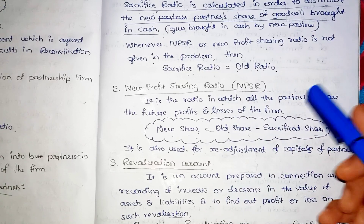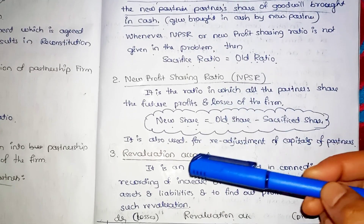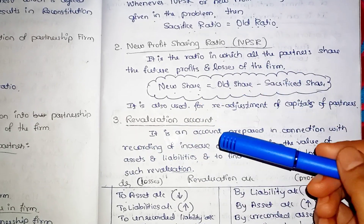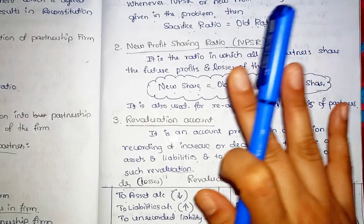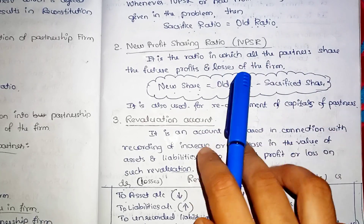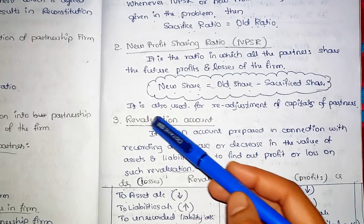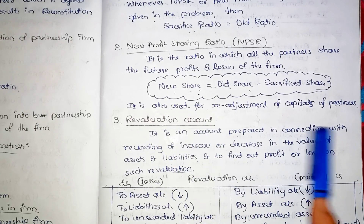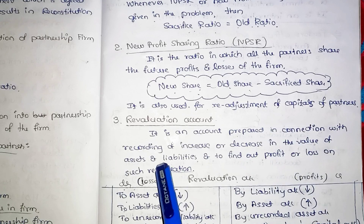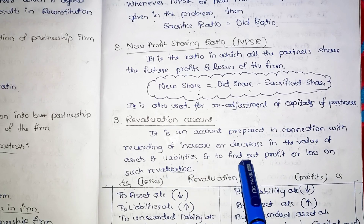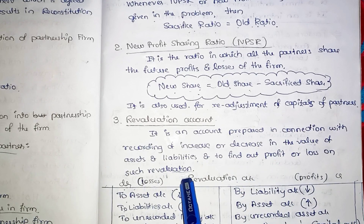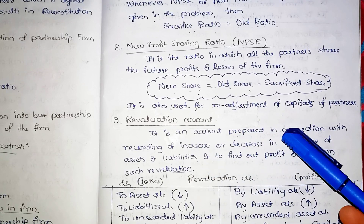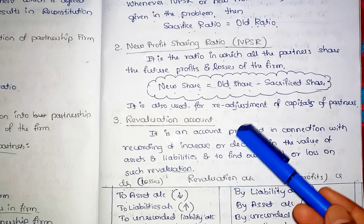This is the point in the model question paper. The next topic is the Re-adjustment or Revaluation Account. At the time of admission or retirement, asset and liability values are revalued. This is an account prepared in connection with recording the increase or decrease in the value of assets and liabilities, and to find out profit or loss on such re-adjustment.